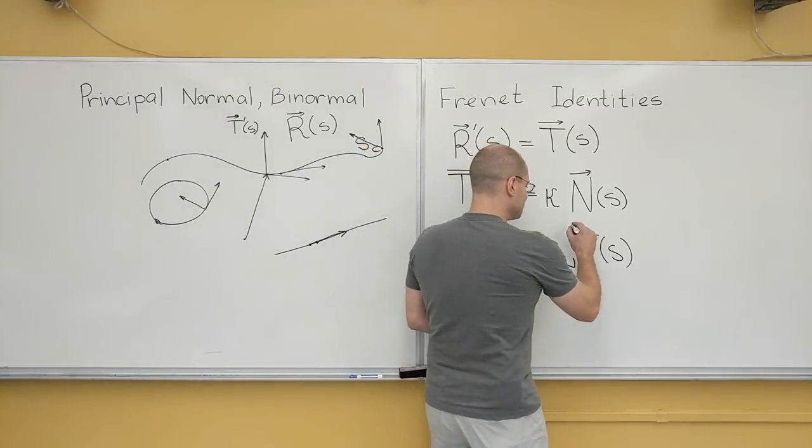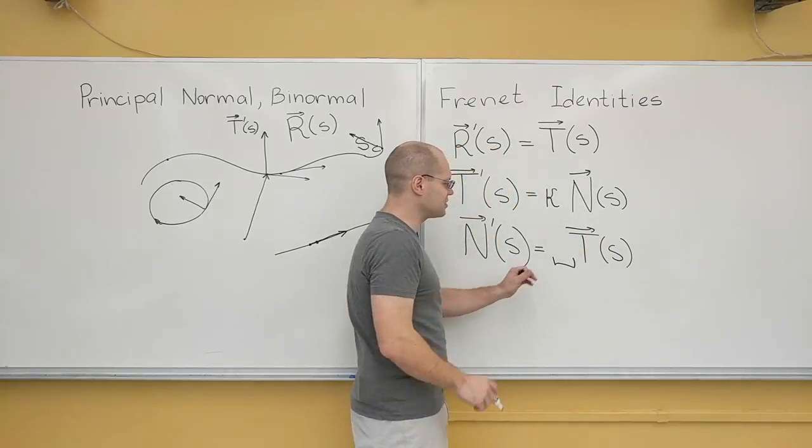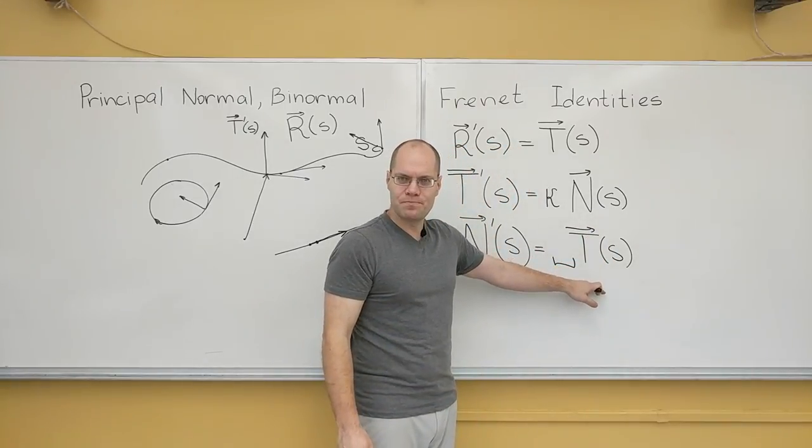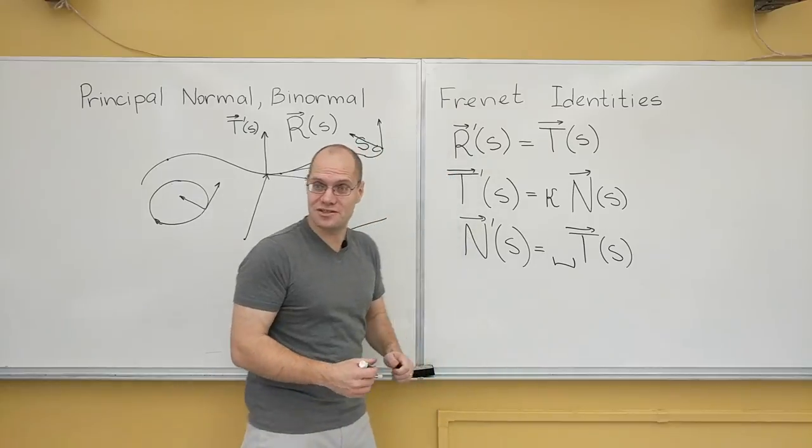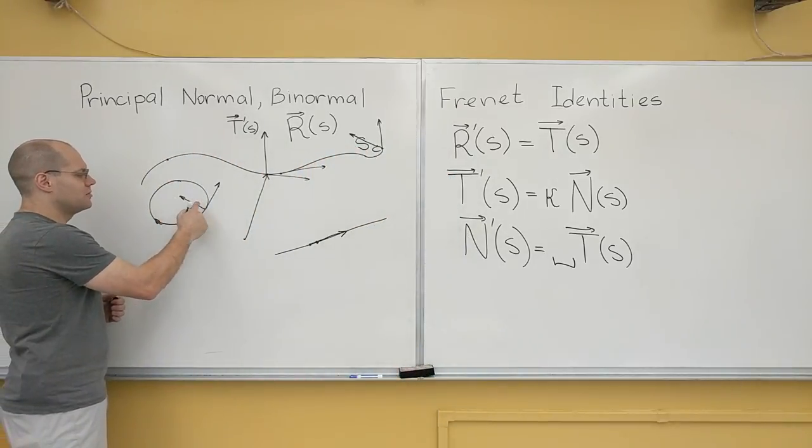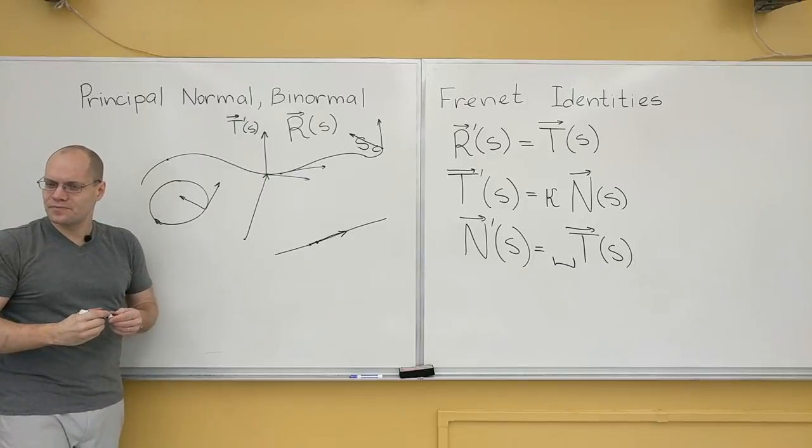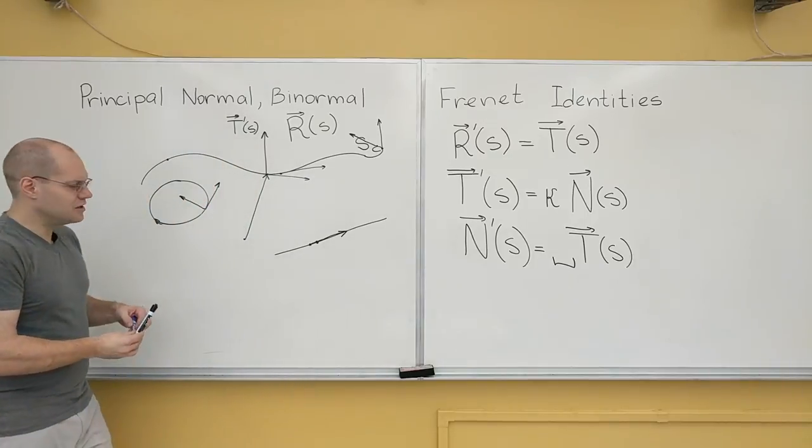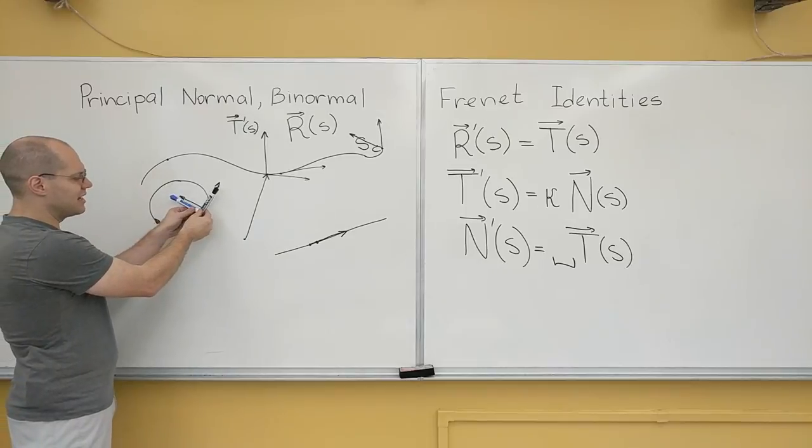So we have established that the result of this differentiation is proportional points in the direction of the tangent. Because that's the only direction that's left. If you're orthogonal to the normal, you point along the tangent. Now let's see what's happening. Let's intuit the fact that there is a minus sign.